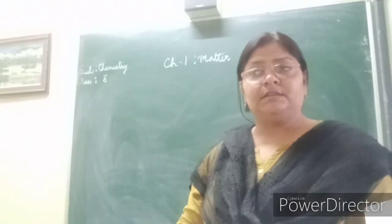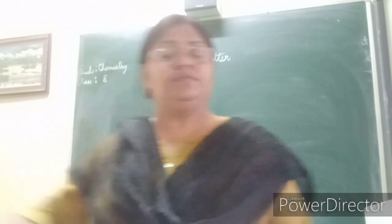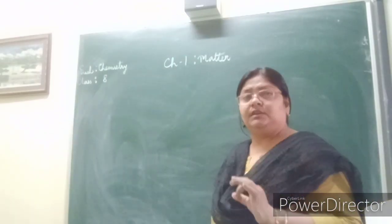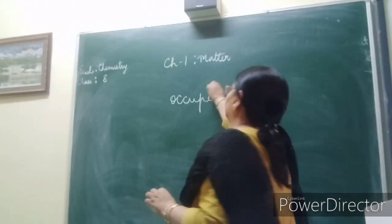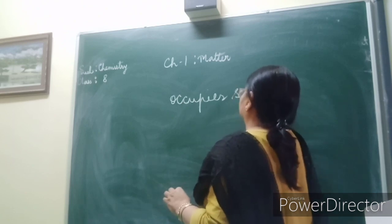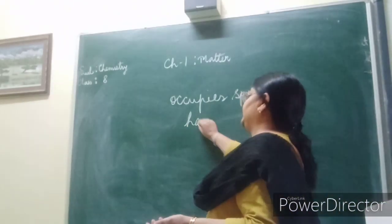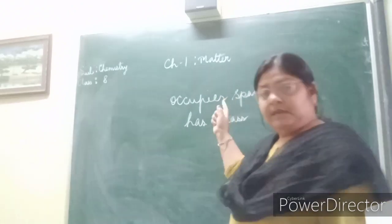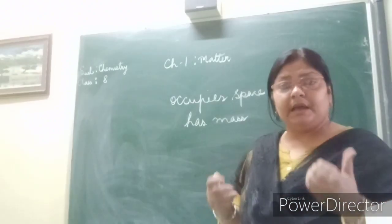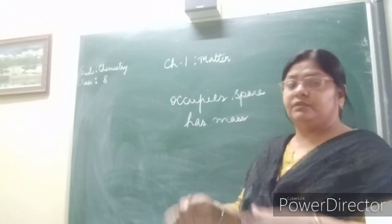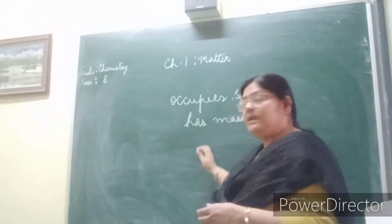If we zero down to what actually matter is in the language of science - matter is something or anything which occupies space. Why? Because it has mass. It occupies space and has mass. Apart from this, it can be perceived by our senses - either we can see it, or we can touch it, we can feel it. So all these conditions are fulfilled by matter.